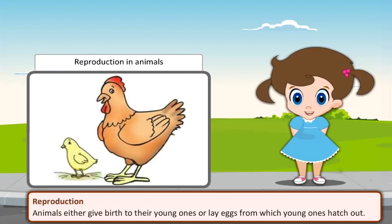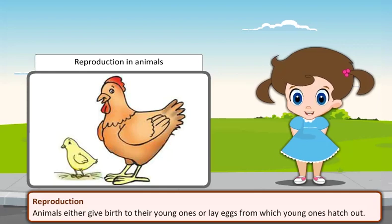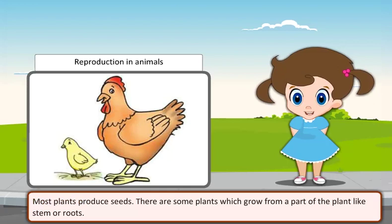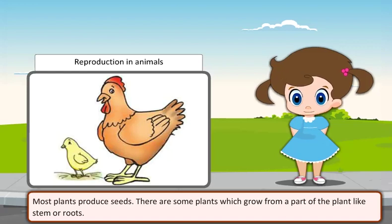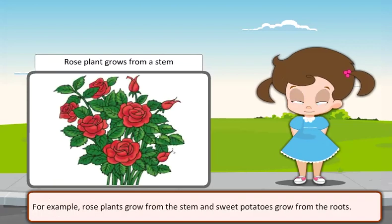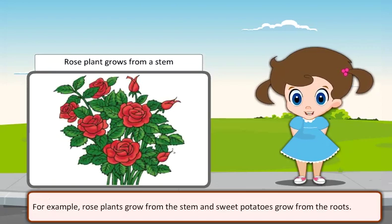Reproduction: Animals either give birth to their young ones or lay eggs from which young ones hatch out. Most plants produce seeds. There are some plants which grow from a part of the plant like stem or roots. For example, rose plants grow from the stem and sweet potatoes grow from the roots.